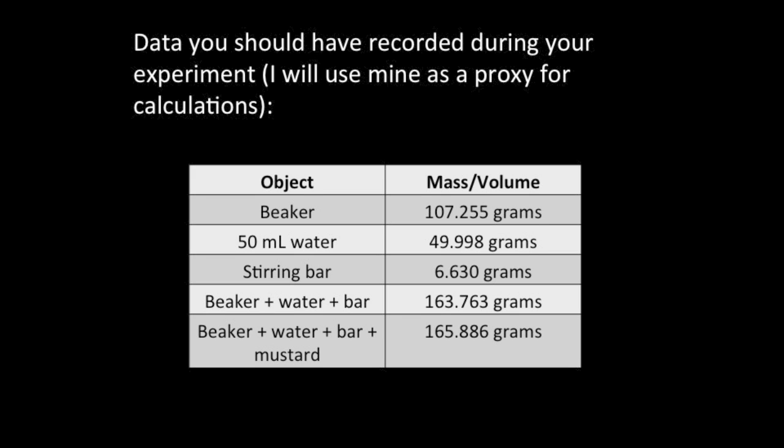By subtracting the mass of the beaker, water, and stirring bar from the mass of the beaker, water, stirring bar, and mustard combined, you can easily derive the mass of mustard used.